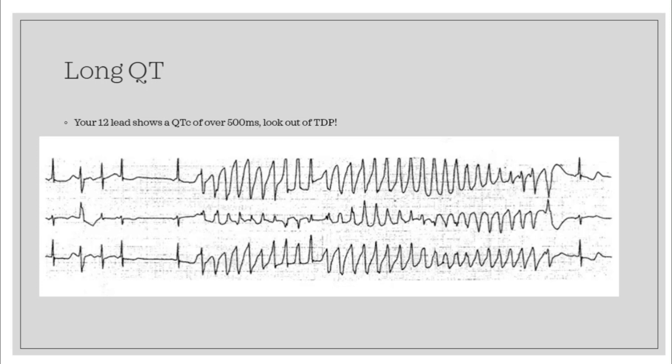You can only call a rhythm torsades if you have had a 12-lead prior showing a prolonged QT. Polymorphic V-tach, on the other hand, is most commonly caused by cardiac ischemia. So if you come across someone with polymorphic V-tach, try defibrillating them, and if that doesn't really work, consider giving two grams IV of magnesium over two to three minutes. Also, hypokalemia can prolong the QU interval, which can also predispose these patients to torsades.